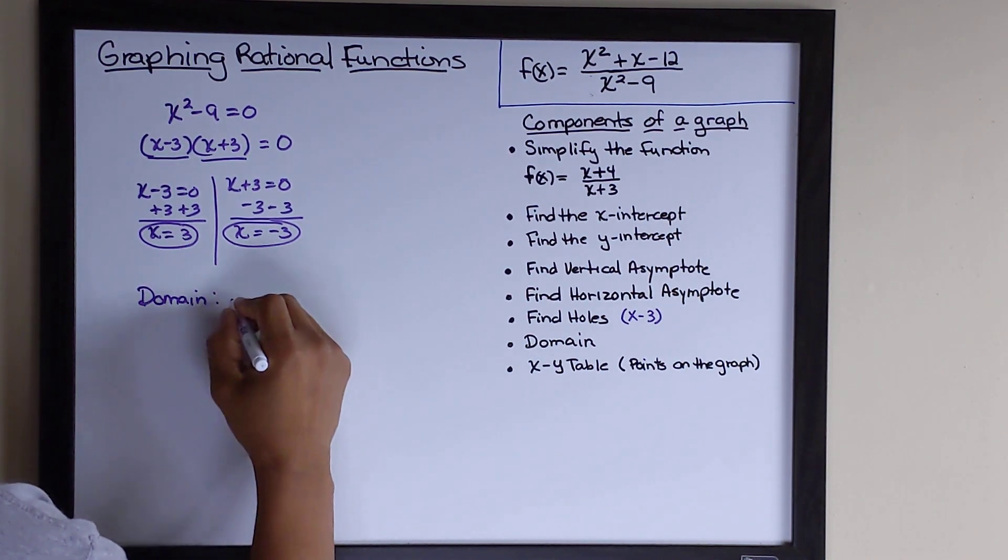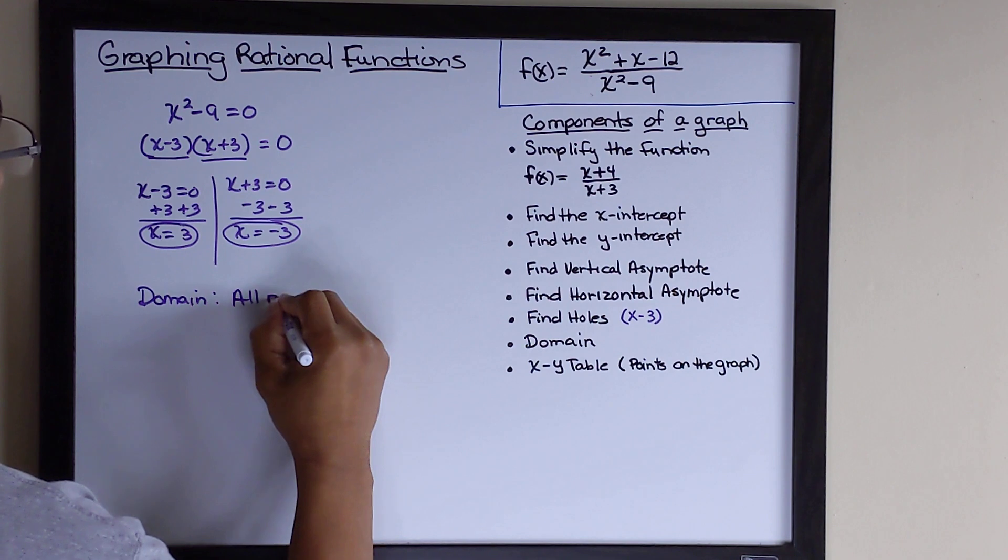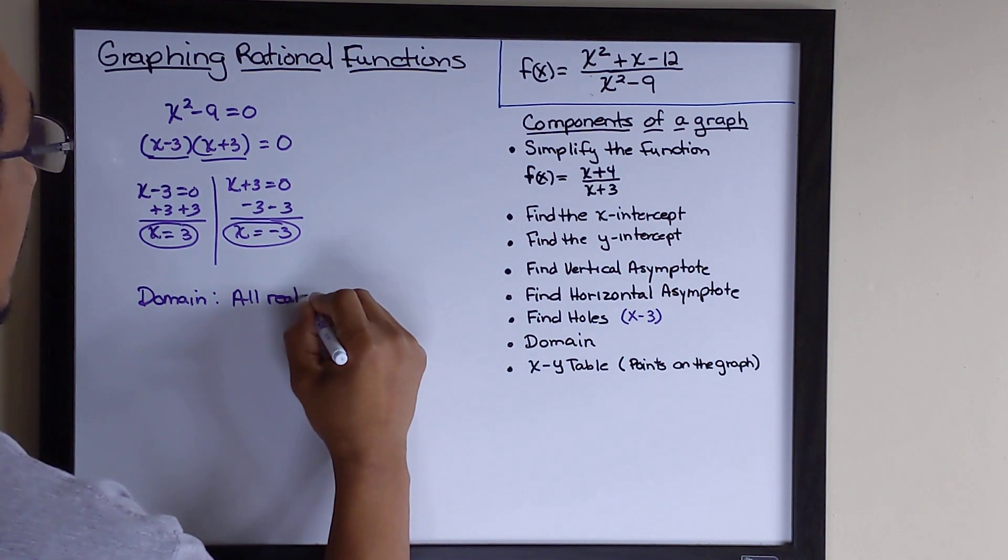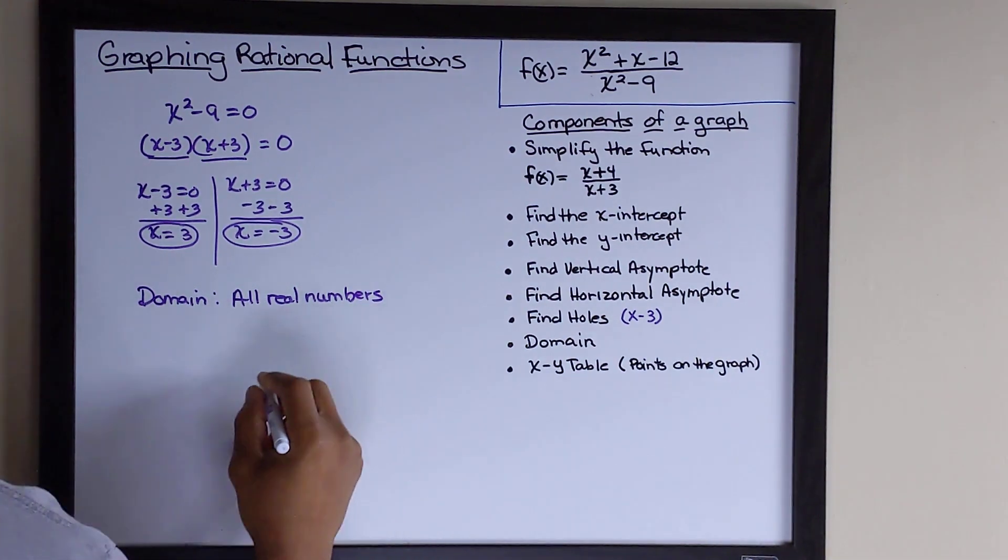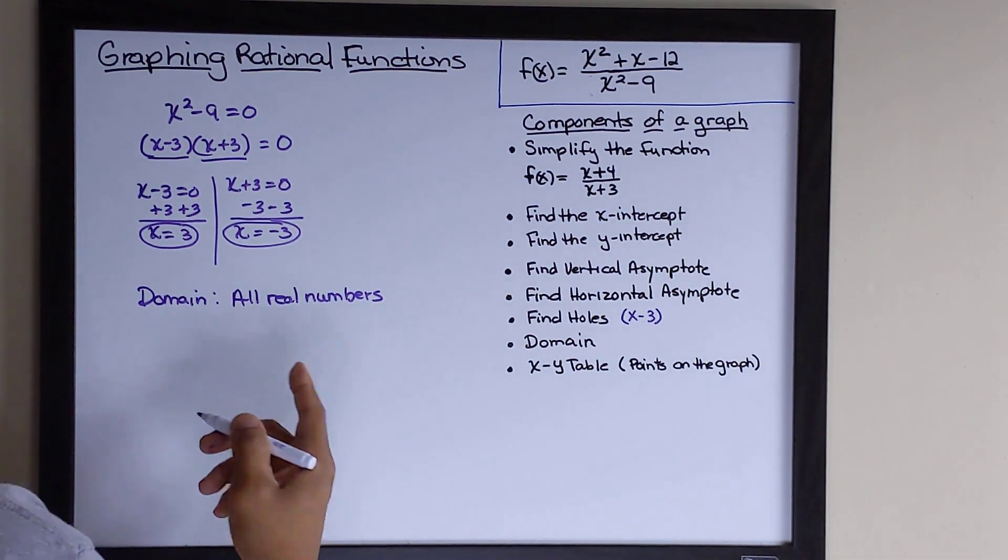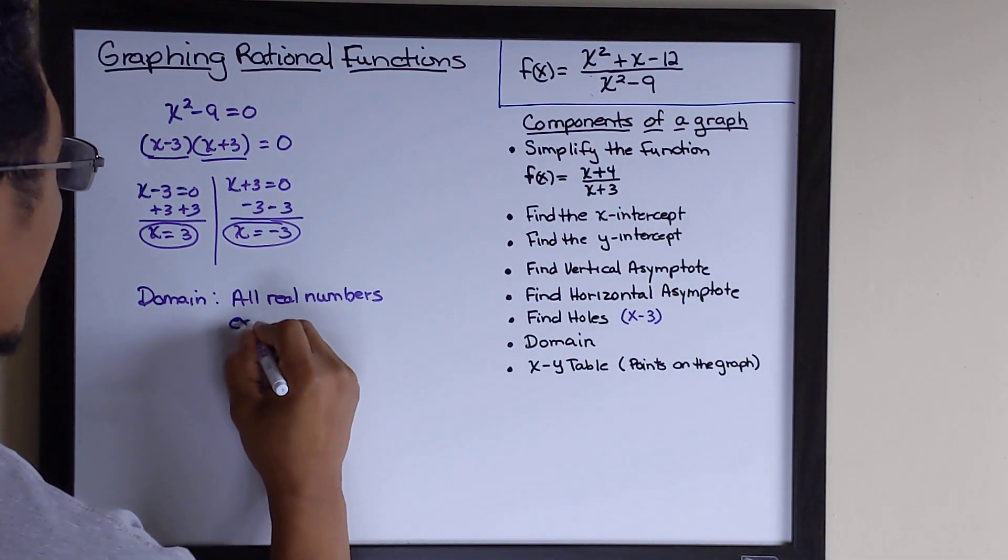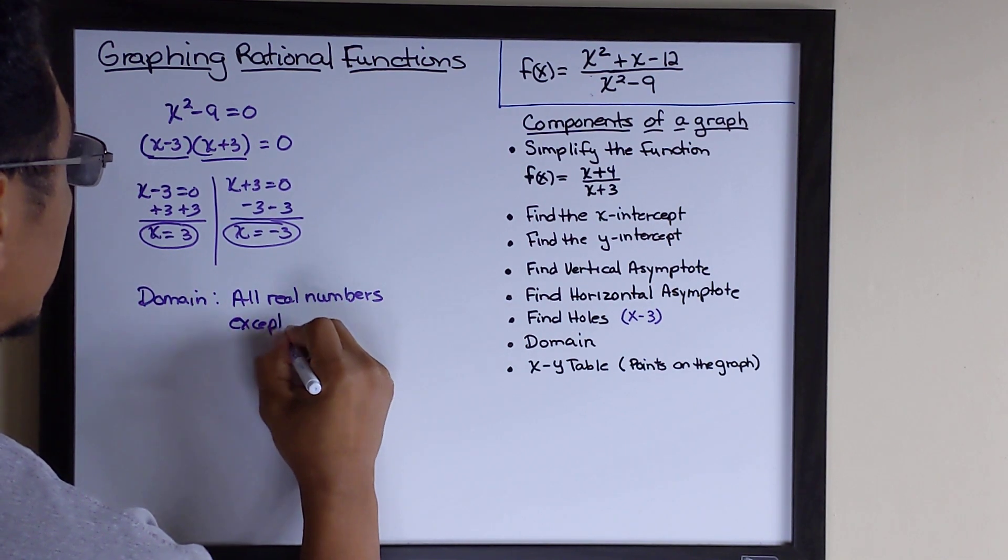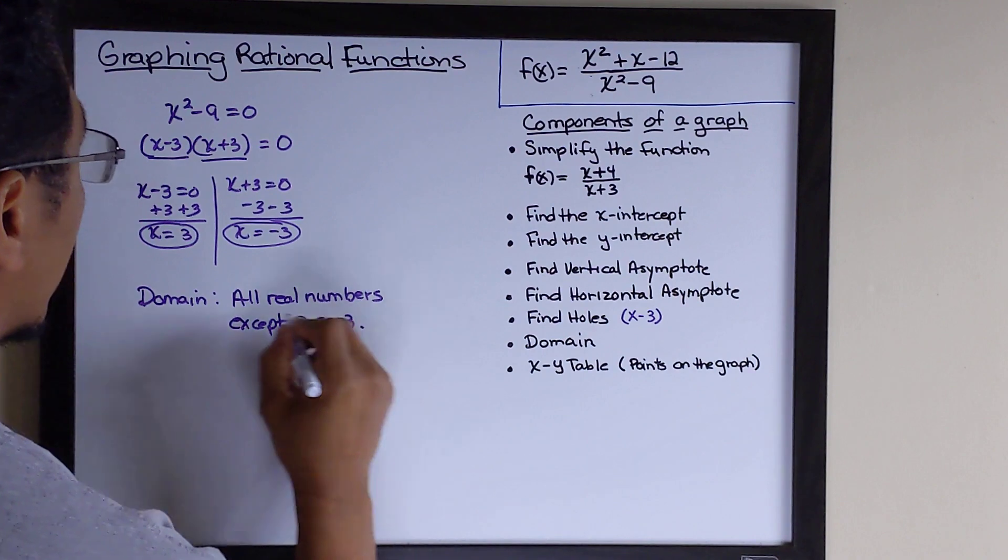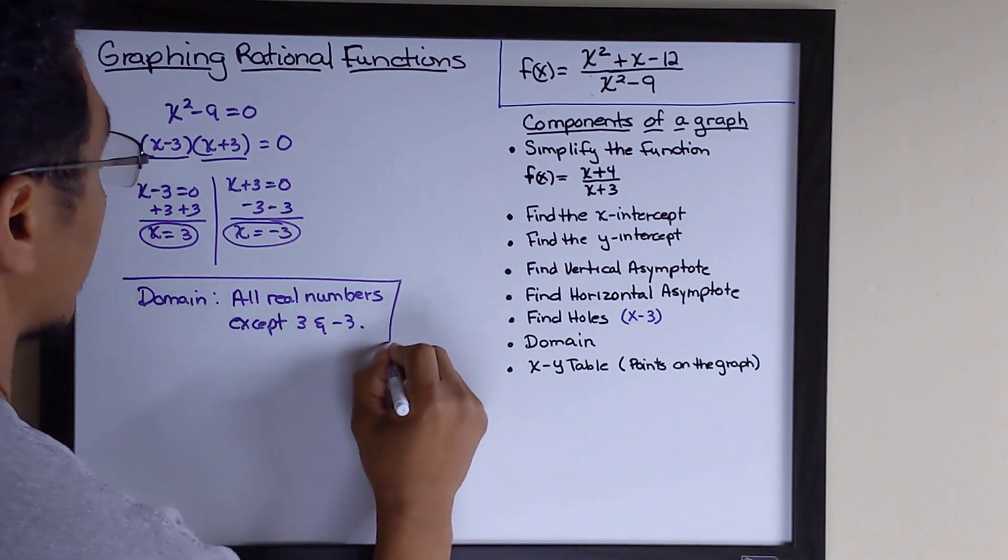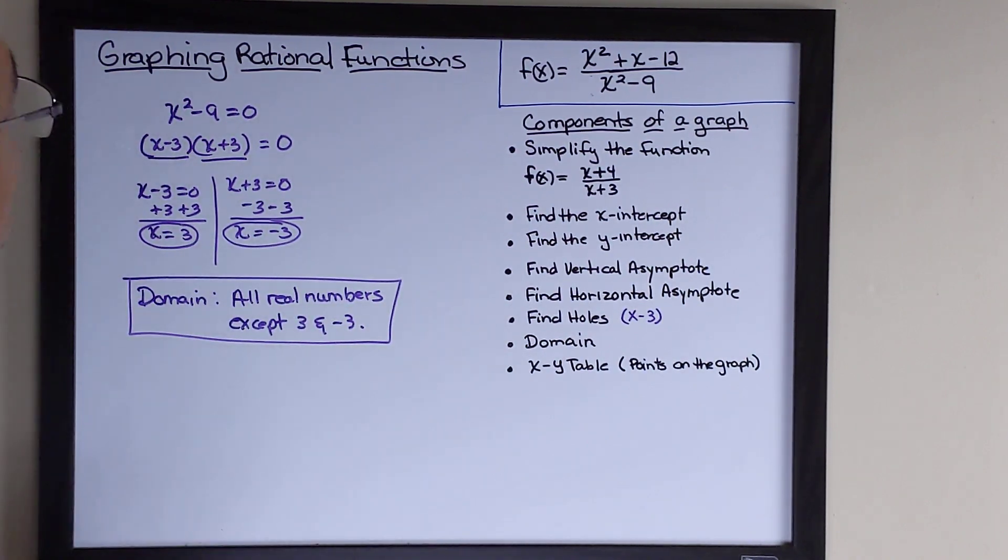So the way we would word that is the domain for this function is going to be all real numbers except the numbers that we can't use, which is going to be except 3 and negative 3. And that is our domain for this function.